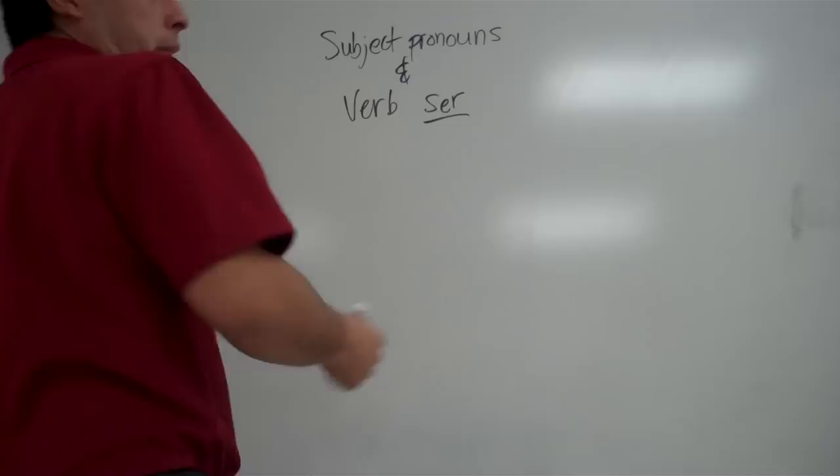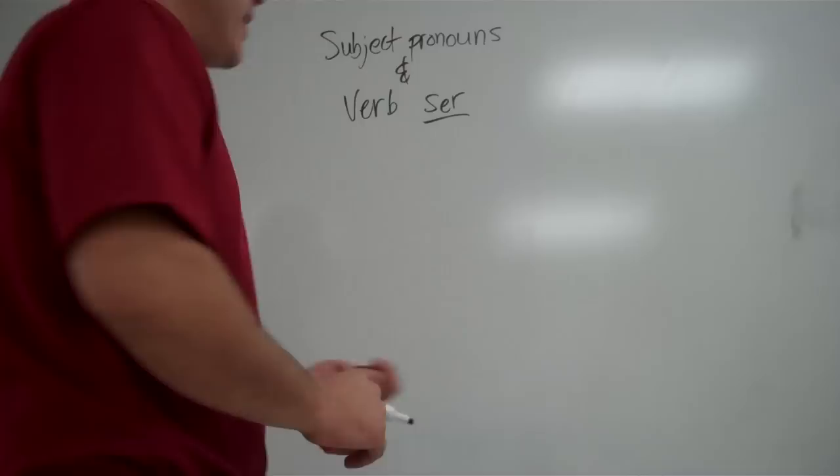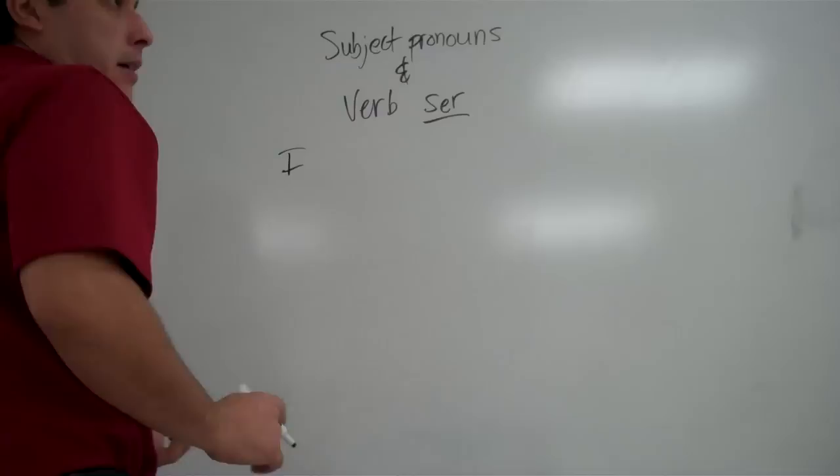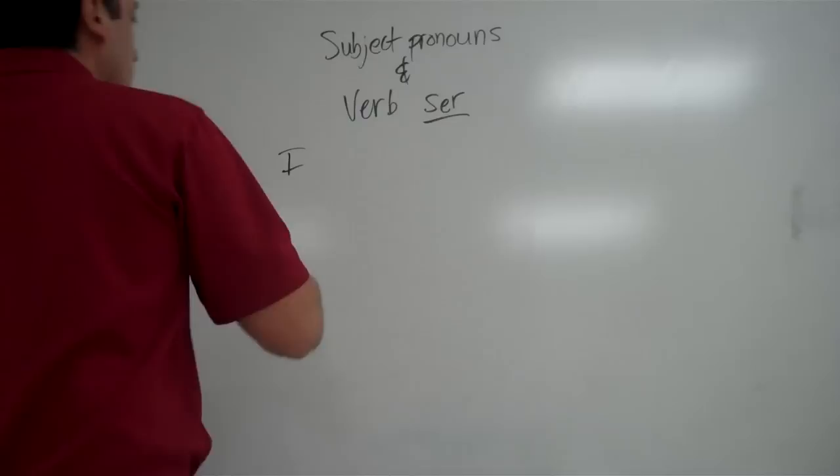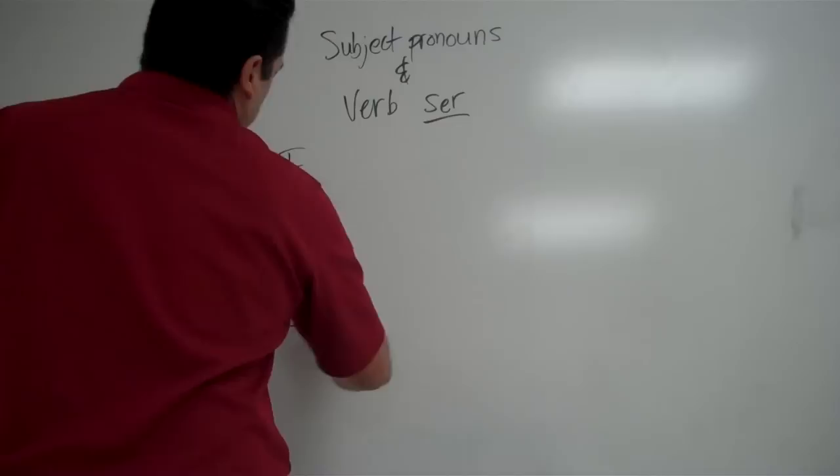We know that subject pronouns are the equivalent of the words I, he, she, we, they in English. So, I'll start off with the English subject pronouns. And these are the ones that tell you who is doing the action or who we're talking about. So, we'll start off with I in English. The next one would be you. And then we have he. And then we have she.